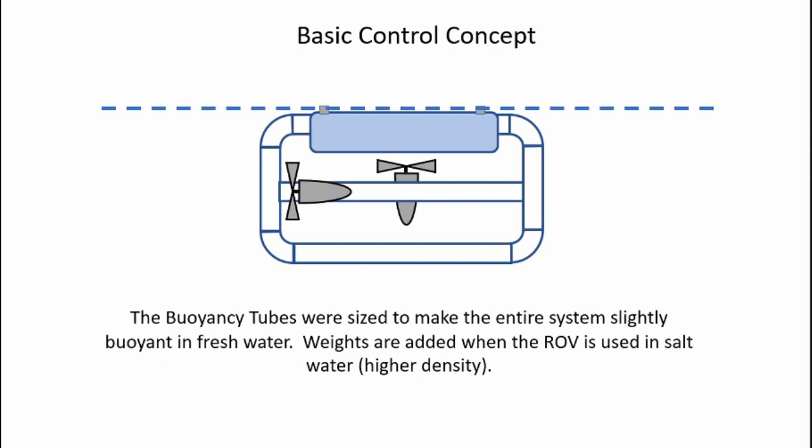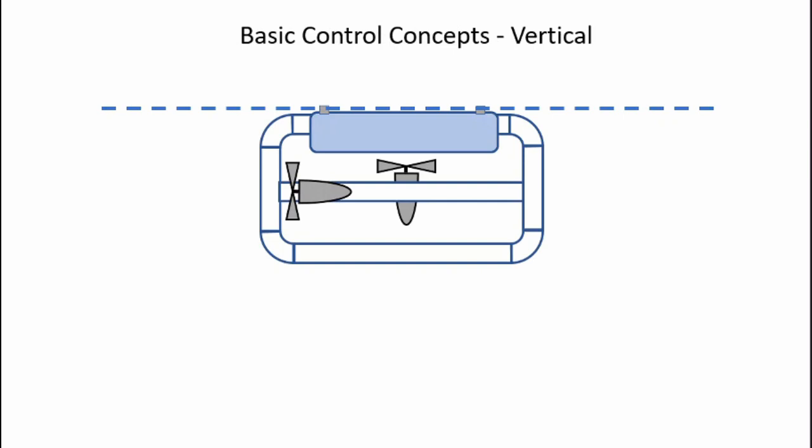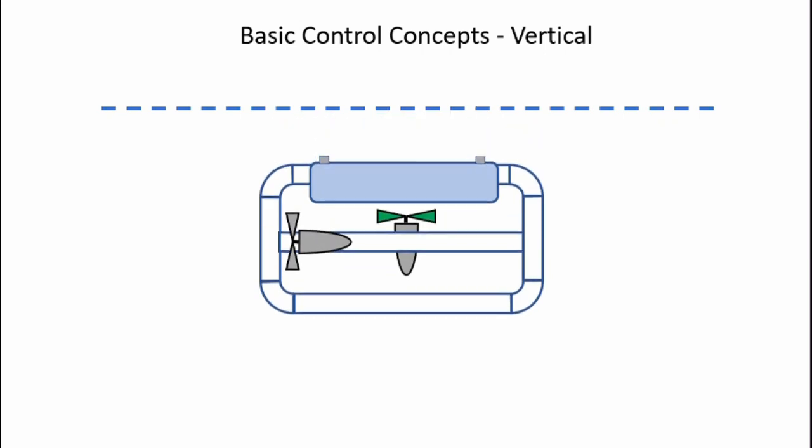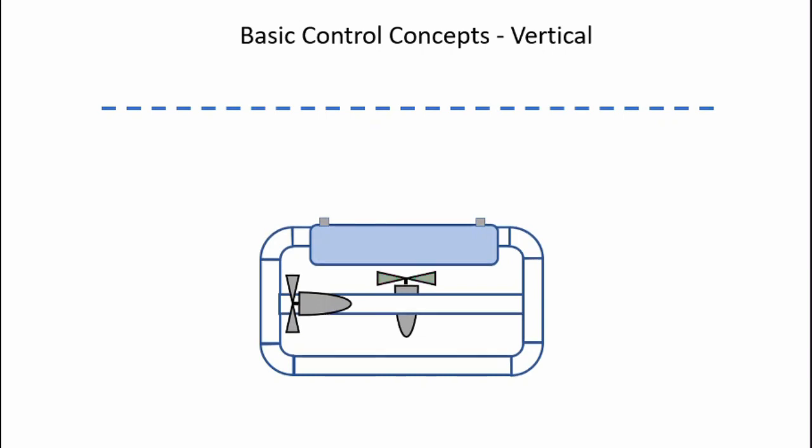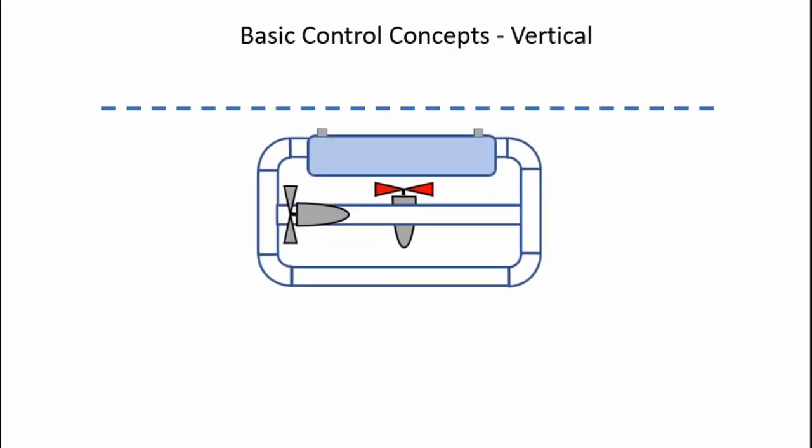Let's take a look at the basic control concept for the ROV. As I stated earlier, the buoyancy tubes were sized to make the entire system slightly buoyant in fresh water. Since salt water is higher density, I've got to add weights to the system to get it to float properly if I want to use it in salt water. Vertical motion is achieved by using the up and down thruster in the middle. I activate the thruster, shown here by the green propeller, and it pushes the ROV down. If I stop the thruster, it should float in water and not move up and down if it's somewhat neutrally buoyant. I reverse the thruster, shown here in red, and the system moves back upwards.